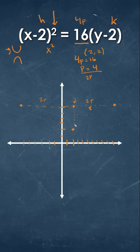And again, the focus to the vertex is going to be of the value of p. So with that information, we can actually graph this based off of the focus and the values of p.